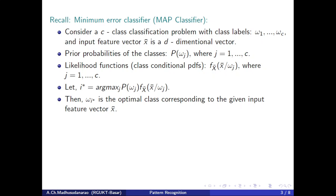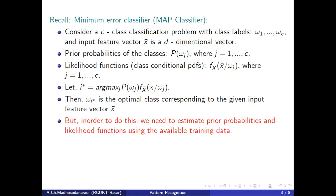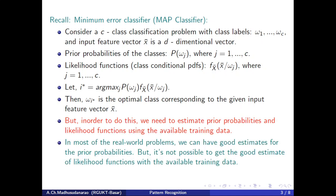To do this, we need good estimates for the prior probabilities and the likelihood functions. We must first estimate prior probabilities and the conditional distributions. In most real-world problems, we can get good estimates for the prior probabilities, but it is not possible to get a good estimate for the likelihood functions with the available training data, because our training data is limited. We may require a huge amount of training data to estimate these joint distributions.